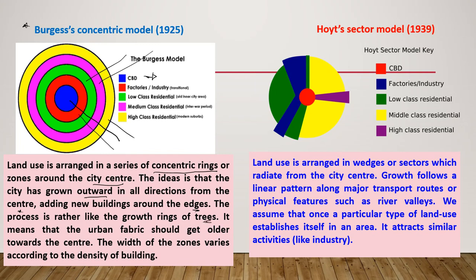The central business district tends to form the center of the city. The idea is that the city has grown outward in all directions from the center, adding new buildings around the edges — rather like the growth of rings of a tree. This means the urban fabric gets older towards the center; at the edge you have newer buildings. The width of each zone varies according to the density of buildings.